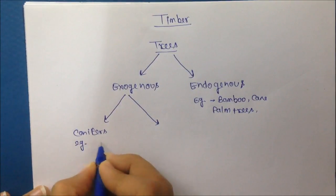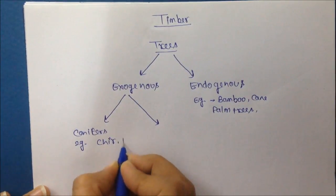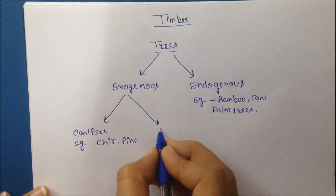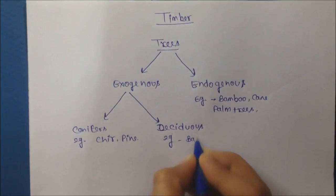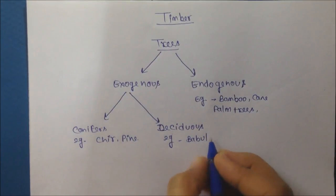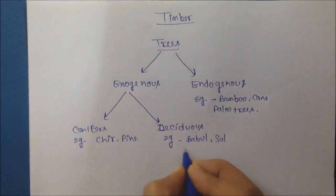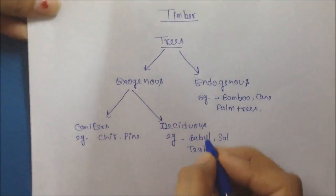Conifer trees are those trees whose leaves are sharp and they are hill areas. Example of conifer trees are chile, pine and deciduous trees are those trees whose broad leaves are and they are plains. Example of deciduous trees are bubbles, salt, teak and for engineering purposes, deciduous trees are important.